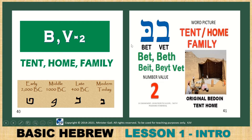Bet — B or V. It is B when there is a dot, a dagesh, in the middle. When it is spelled without the dot it is written with a B but pronounced as a V — like Devarim spelled with a B but pronounced Devarim. This is the tent, home, or family. The original shape looked like a Bedouin tent from 2000 BC, and they evolved to the shape today. The value is number 2: tent, home, or family.